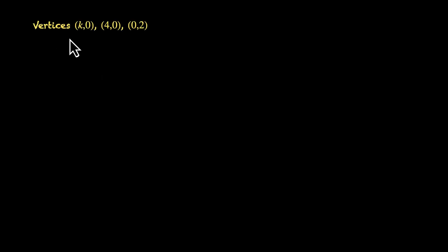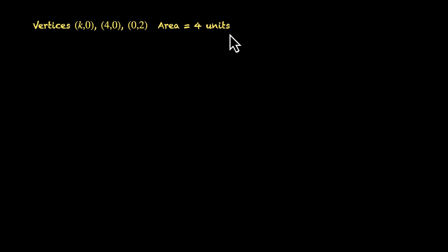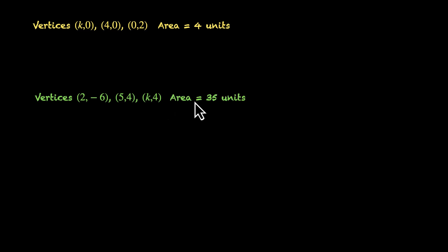Sometimes we're given the area and need to find the coordinates of one of the vertices. We can use this same formula backwards. Here are two problems. First: vertices are (k, 0), (4, 0), and (0, 2), and the area is 4 units — find k. Second: vertices are (2, –6), (5, –4), and (k, 4), with area 35 units. Pause the video and give this a try.